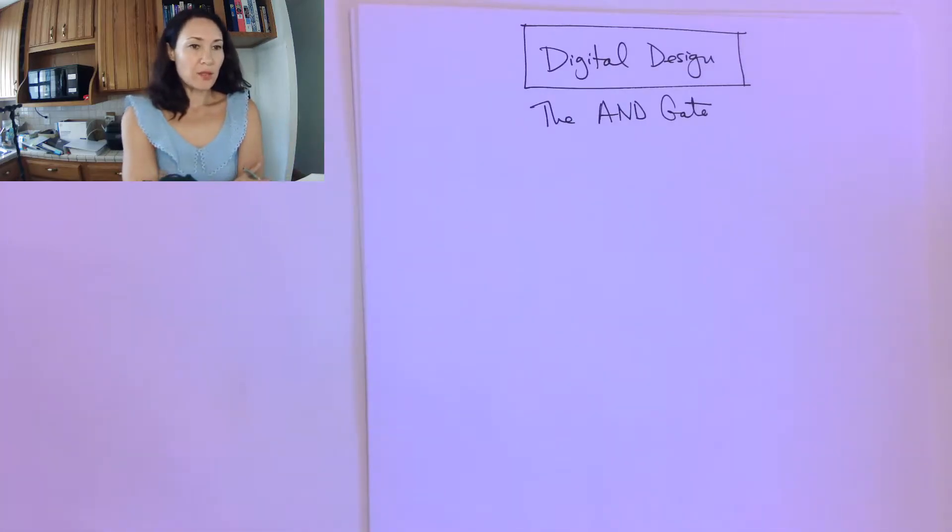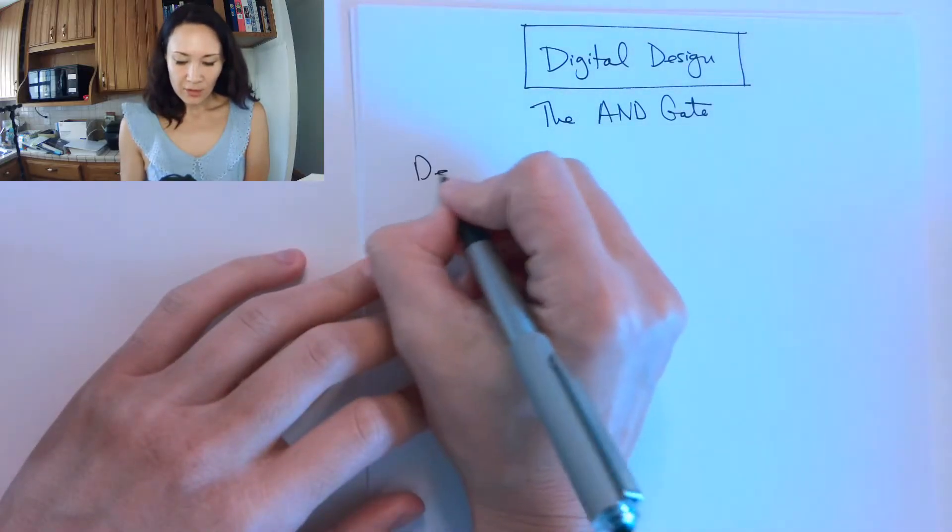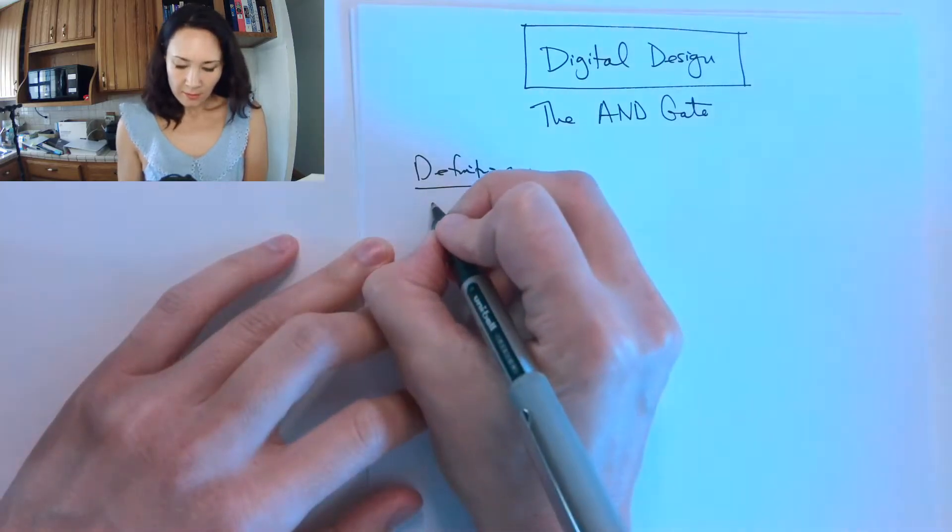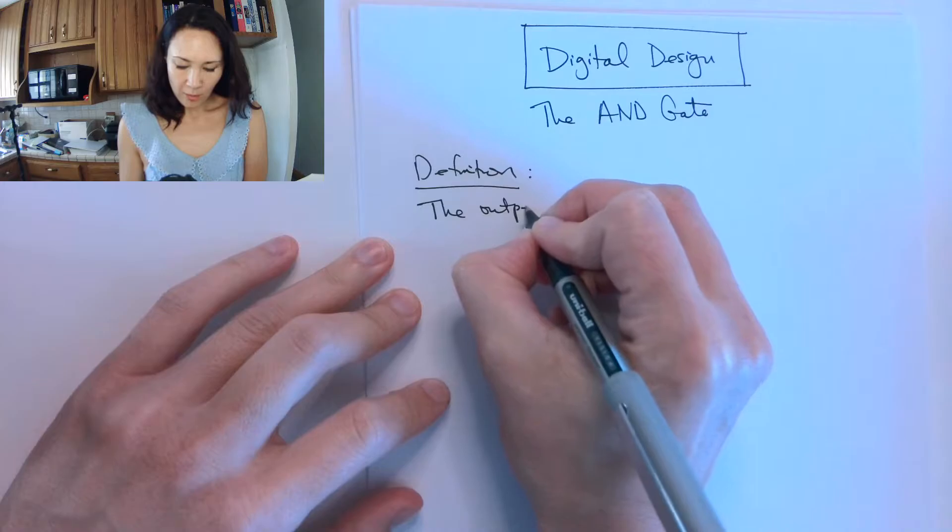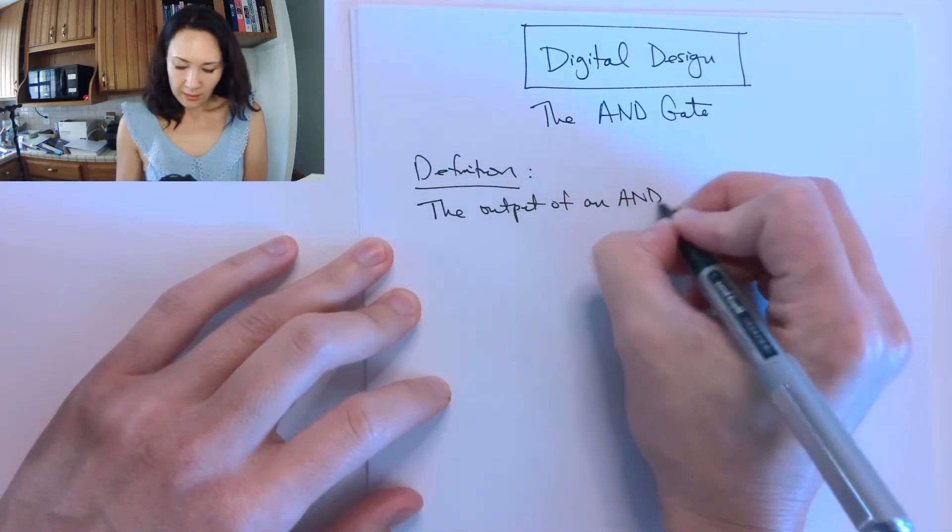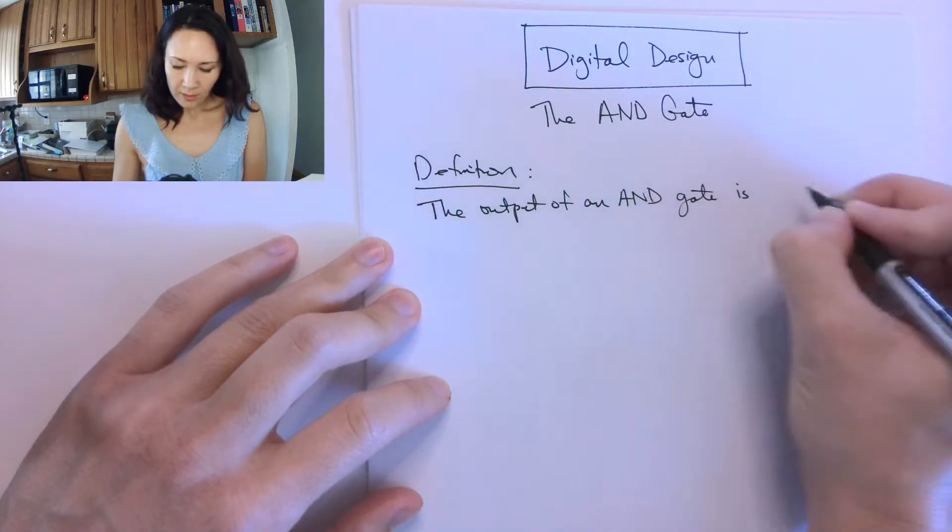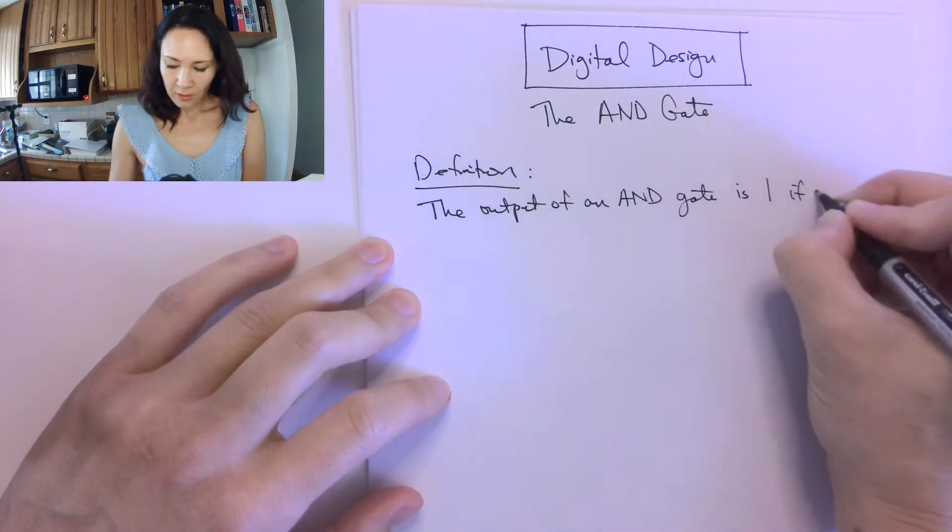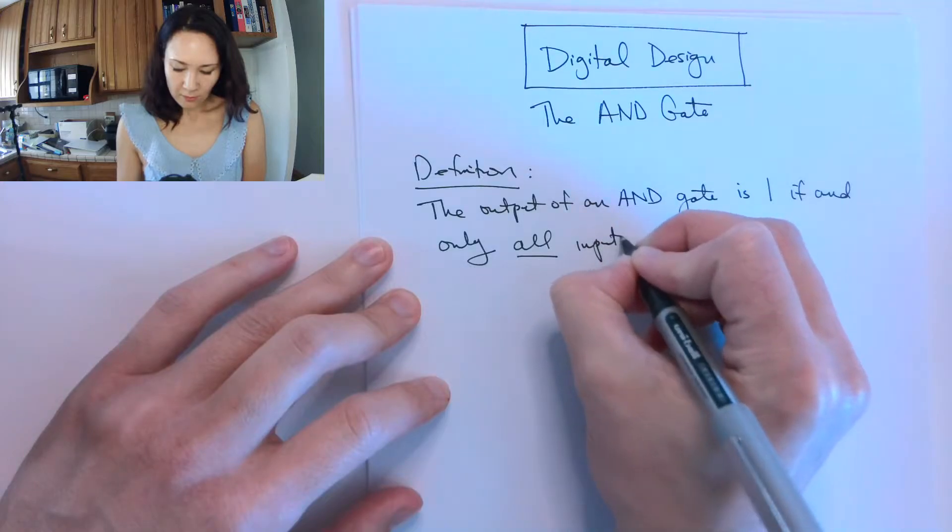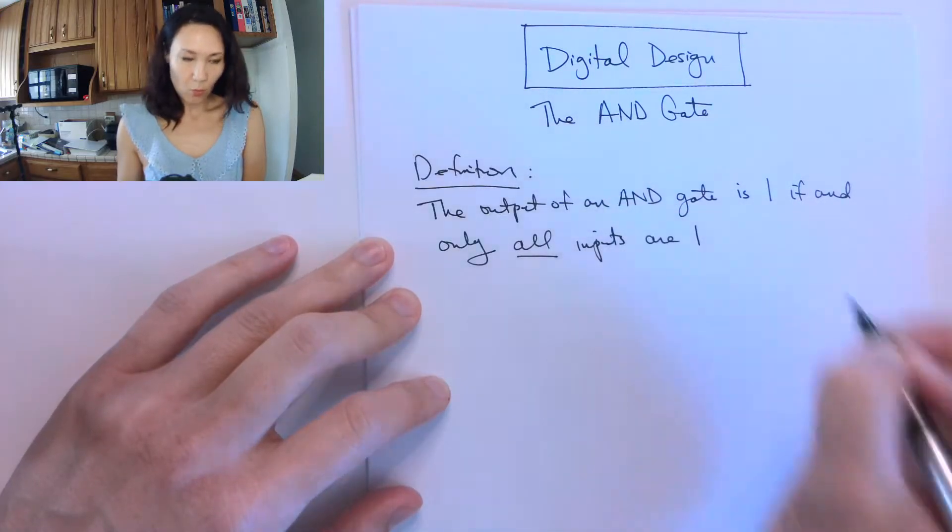The next logical gate that we're going to introduce is the AND gate. The AND gate actually does implement binary multiplication. So the definition of ANDing is the output of an AND gate is 1 if and only if all inputs are 1.